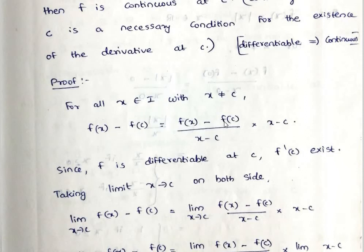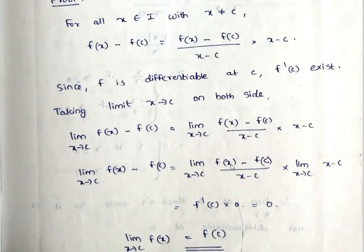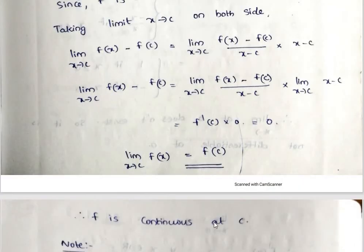For the proof, we write f(x) - f(c) = [f(x) - f(c) / (x - c)] × (x - c). Since f is differentiable at c, f'(c) exists. Taking the limit as x tends to c: limit of f(x) - f(c) = limit of [f(x) - f(c) / (x - c)] × (x - c). The limit splits because this limit exists, so it equals f'(c) times the limit of (x - c). Since x tends to c, x - c tends to 0. Therefore the limit of f(x) - f(c) = 0, which means f is continuous at c.